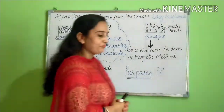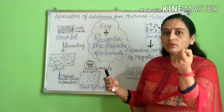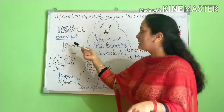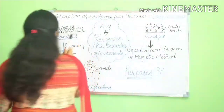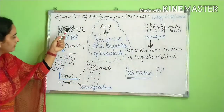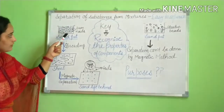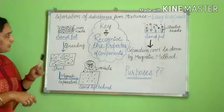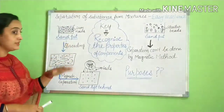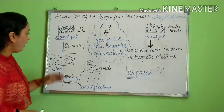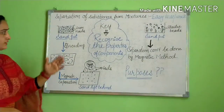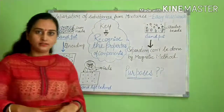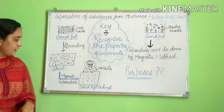For example, if we have a few iron nails and these iron nails have been sunk into a sand pit. As you can see in this figure, the iron nails are black in color and blue colored sand is present here. These iron nails are so deeply sunk in the sand pit that they are not visible to our naked eyes. How do we separate these two substances? We can separate them by using the magnetic separation method.